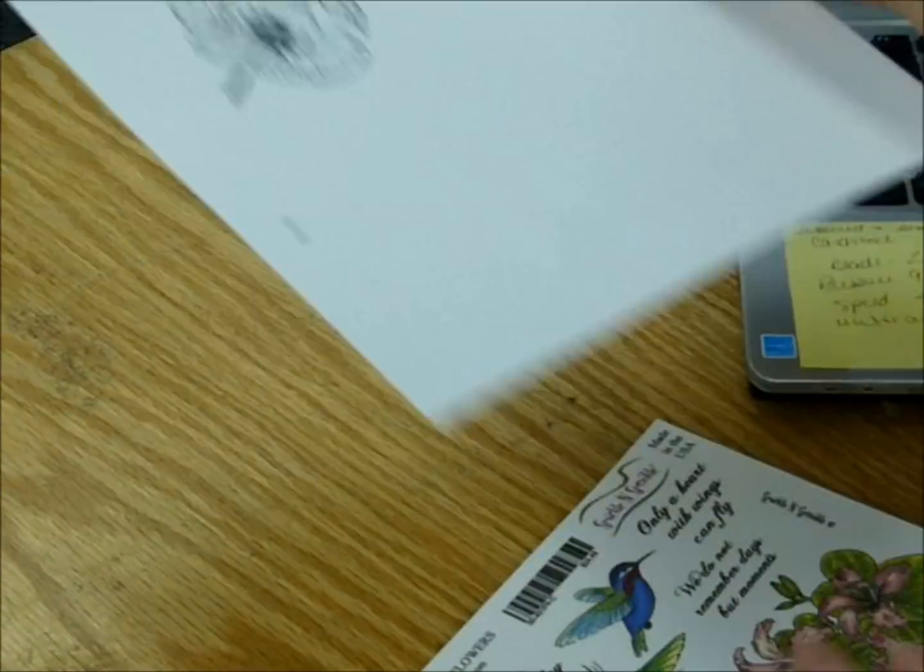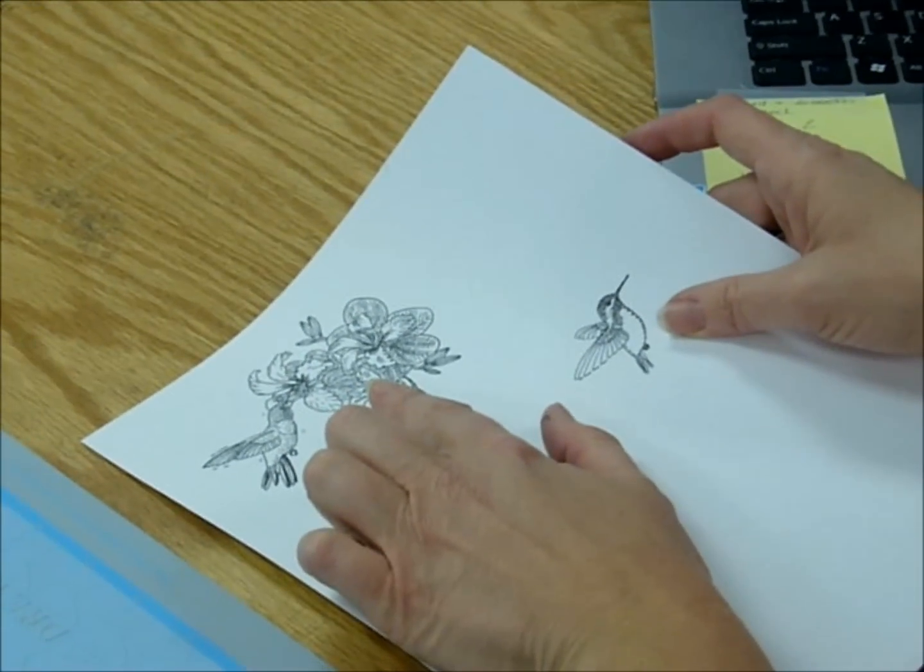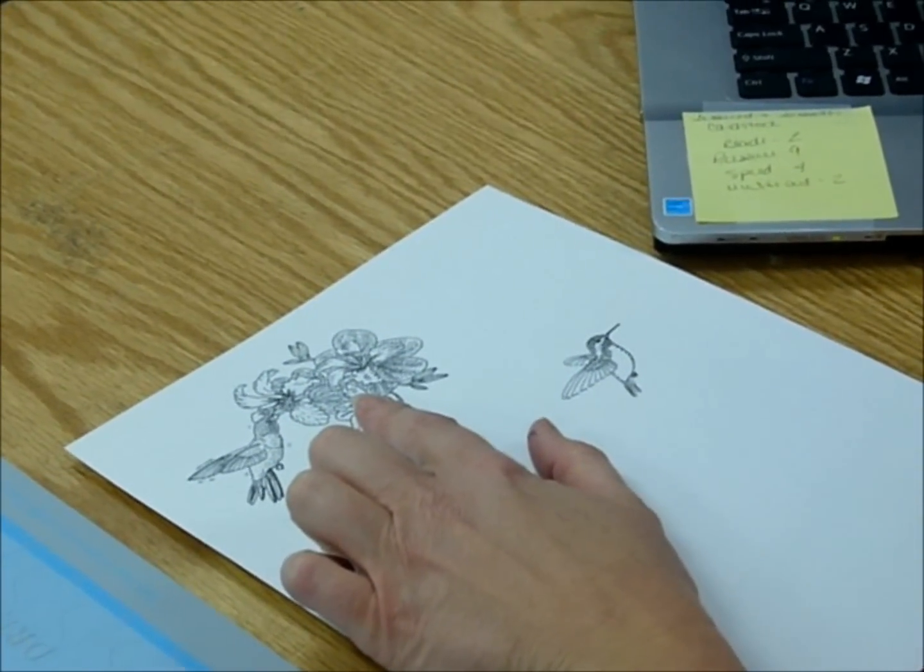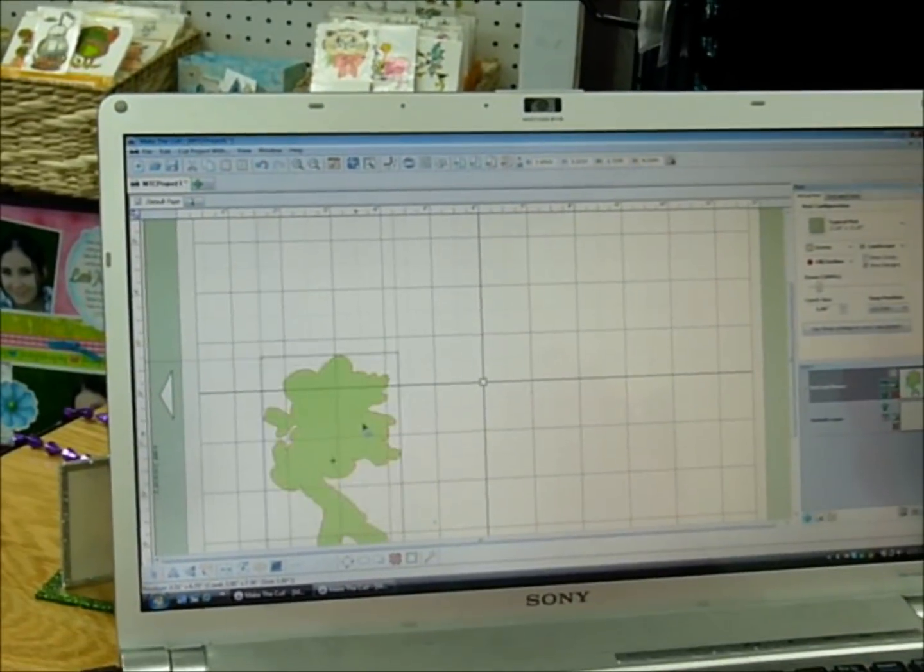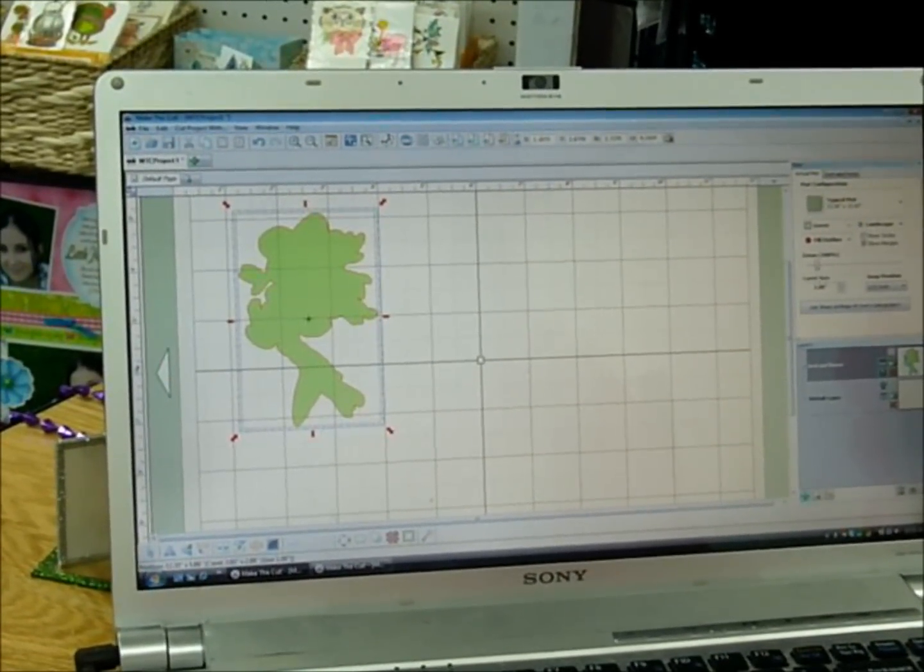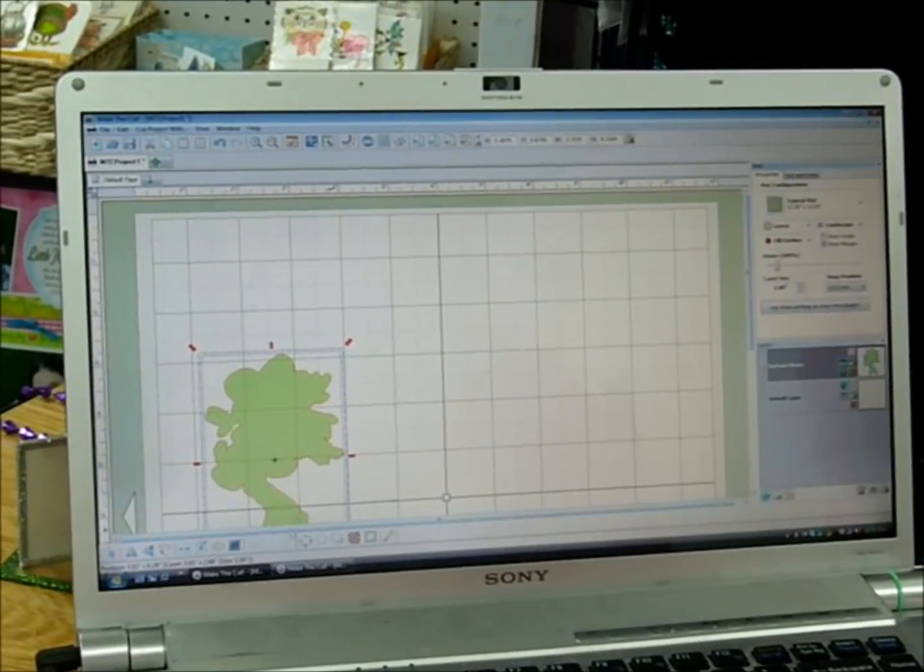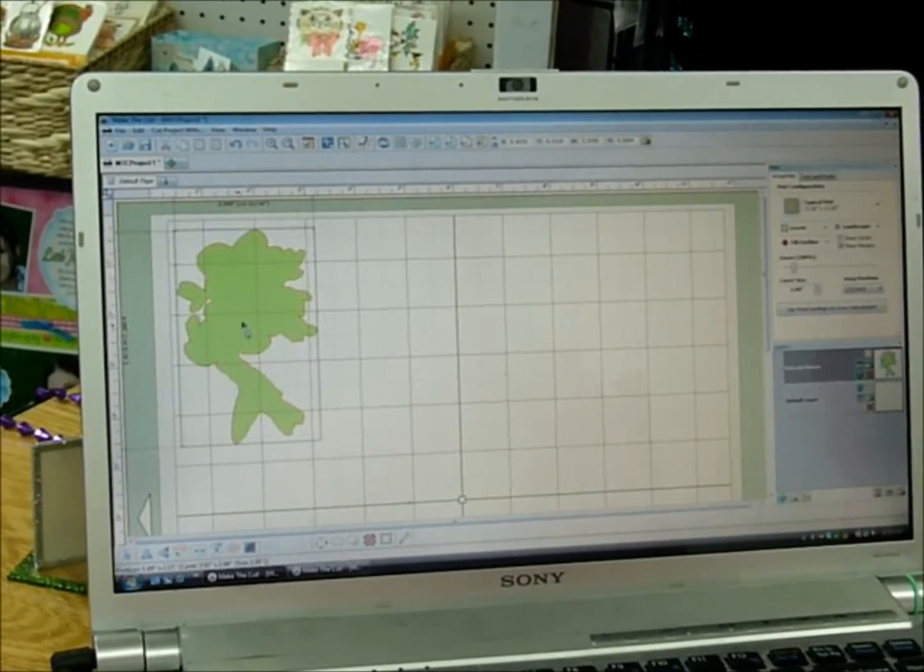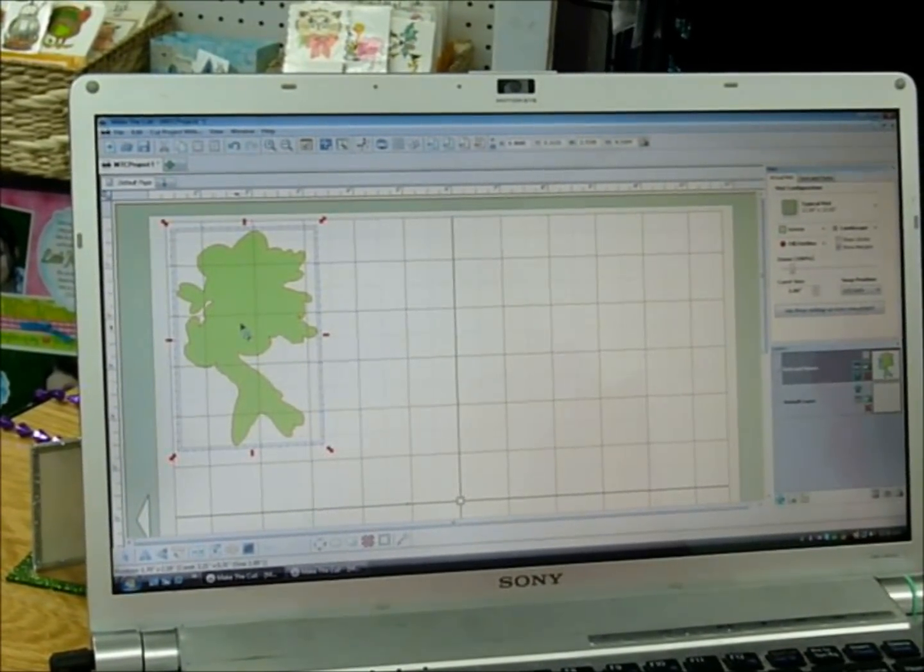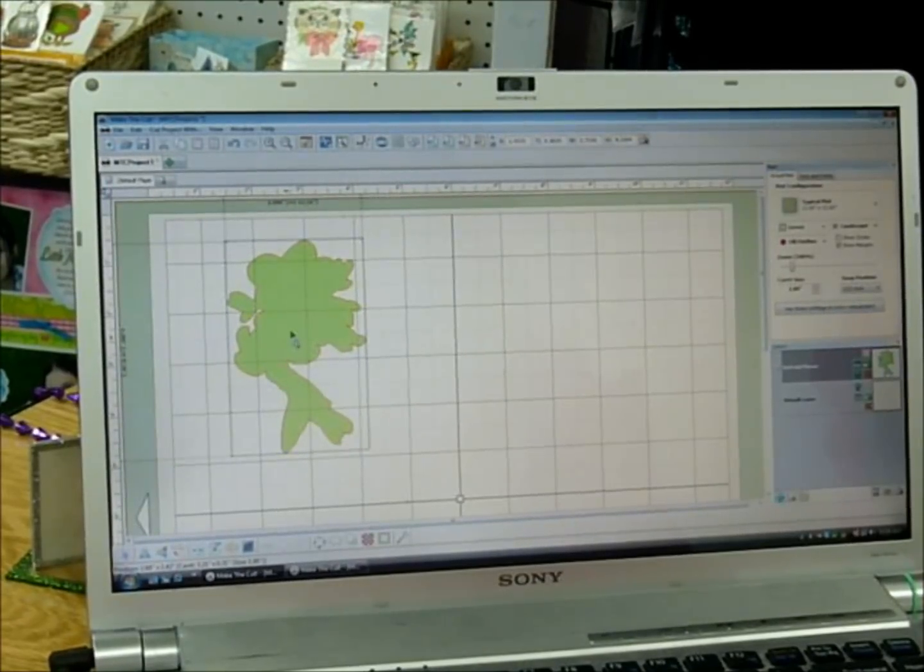I've already stamped it out and what I'm going to do first is pull this in and import it and put it on my mat where I want it to cut. Wherever I place this on this mat, that's where it's going to cut on the machine. So I'm going to move it over to about right here.